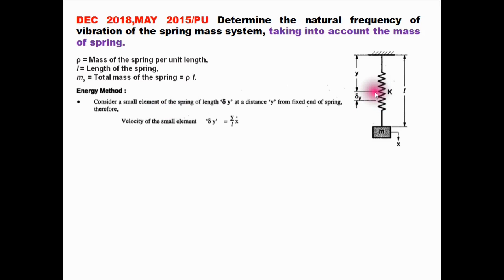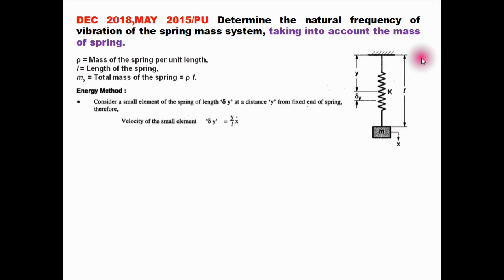Consider a small element of spring of length delta y at a distance y from the fixed end. The velocity of this small element is given by (y/L)·x_dot. To verify: substituting y equals 0 gives velocity 0, which is valid since that point is fixed to the ceiling. Substituting y equals L gives velocity x_dot, satisfying both boundary conditions.